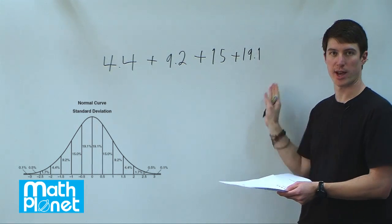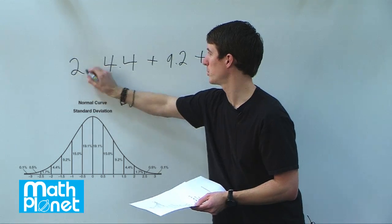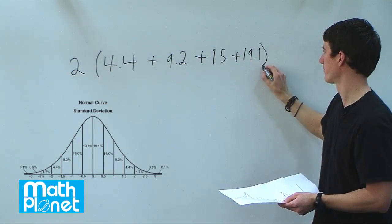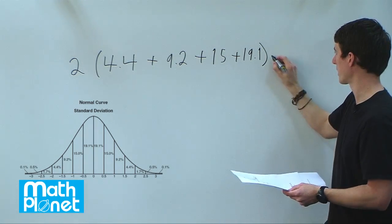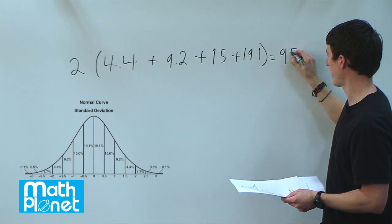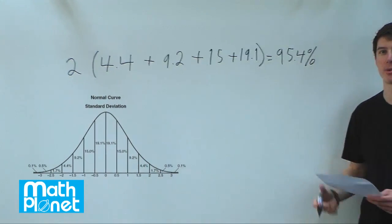The other side is going to be the exact same thing. So we're going to have 2 times this sum. When we add this sum up and multiply it by 2, we get 95.4 percent.